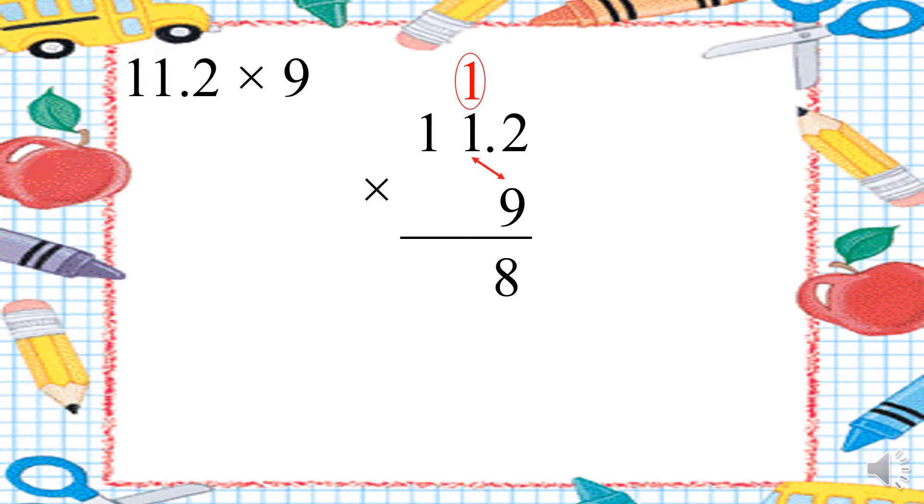9 times 1. 9 plus 1. 10. 0 down and 1 up. 9 times 1. 9 plus 1 equals 10. I have finished.